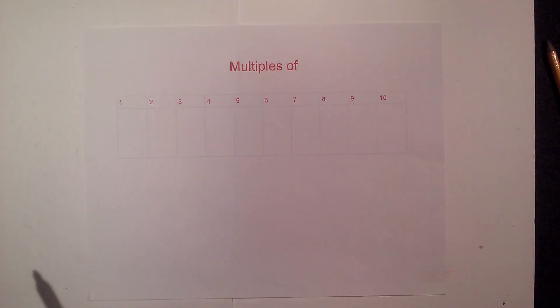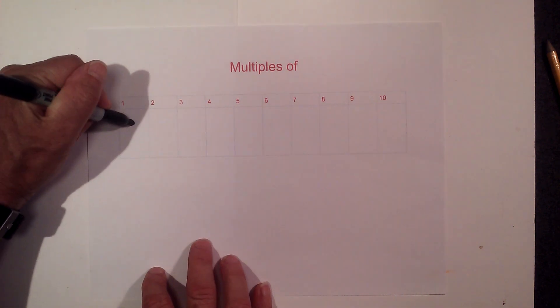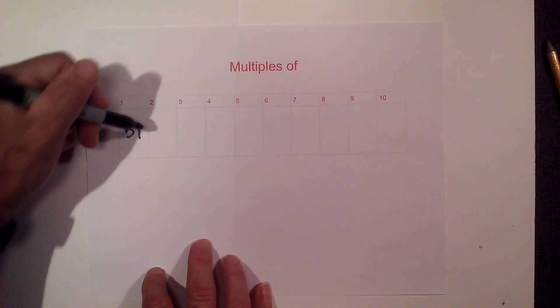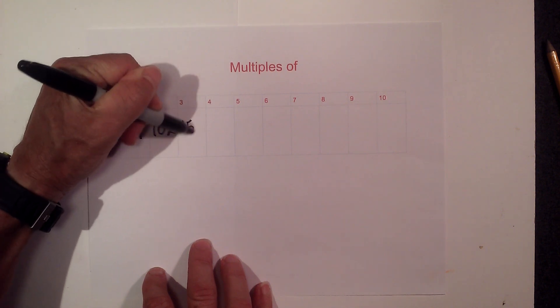Now let's look at the multiples of 51. The multiples of 51 are as follows: we have 51, times 2 is 102, times 3 is 153.